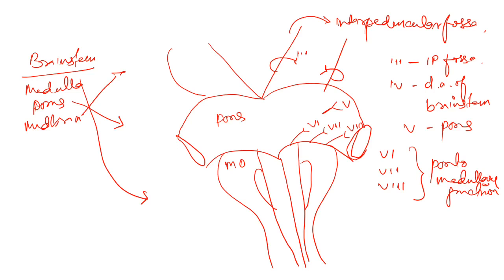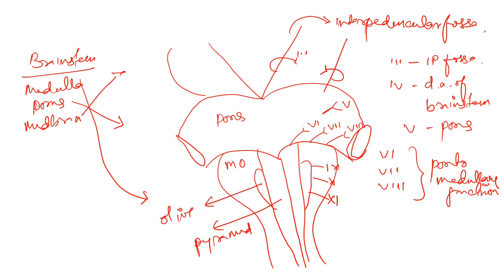Next, nerves nine, ten, and eleven originate here. Nine, ten, and eleven — where do they originate? This region is known as the pyramid, and this is known as the olive. Nerves nine, ten, and eleven originate lateral to the olive.